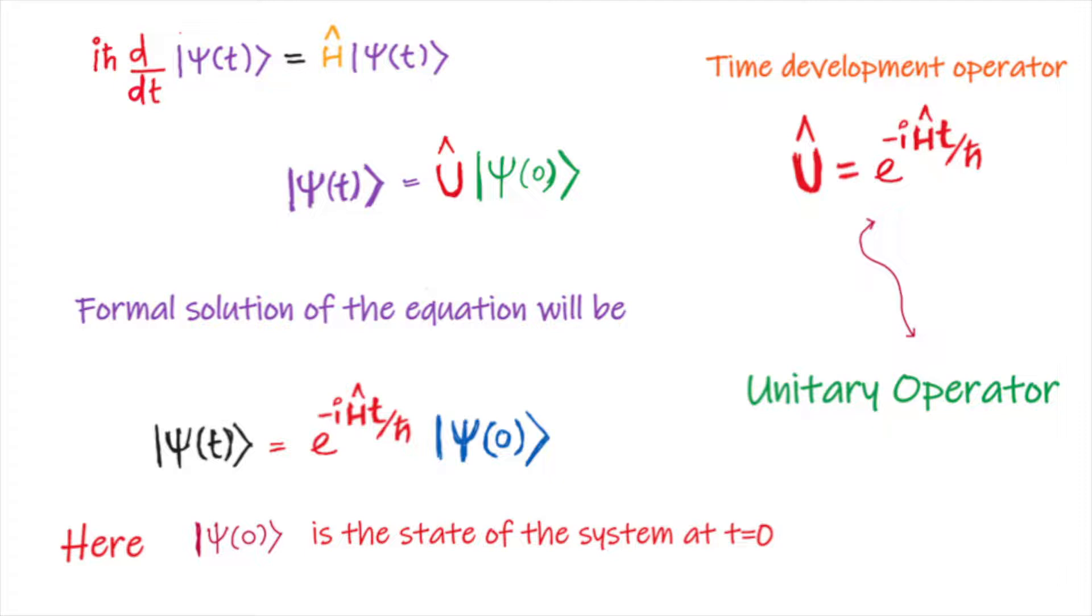That is, given the initial state ψ₀, how does one find the state ψ(t) at a later time t?